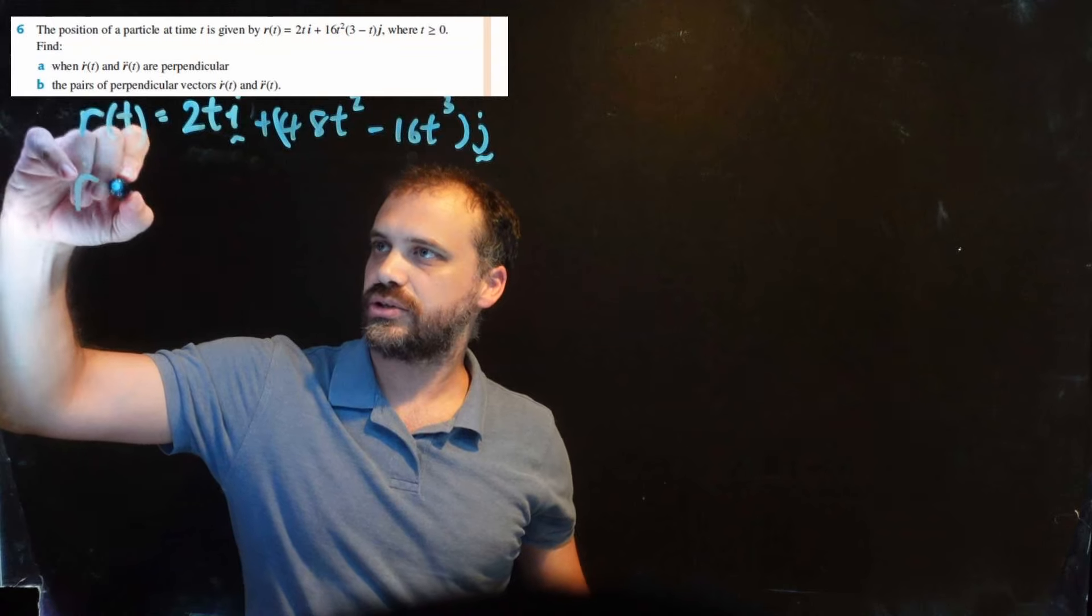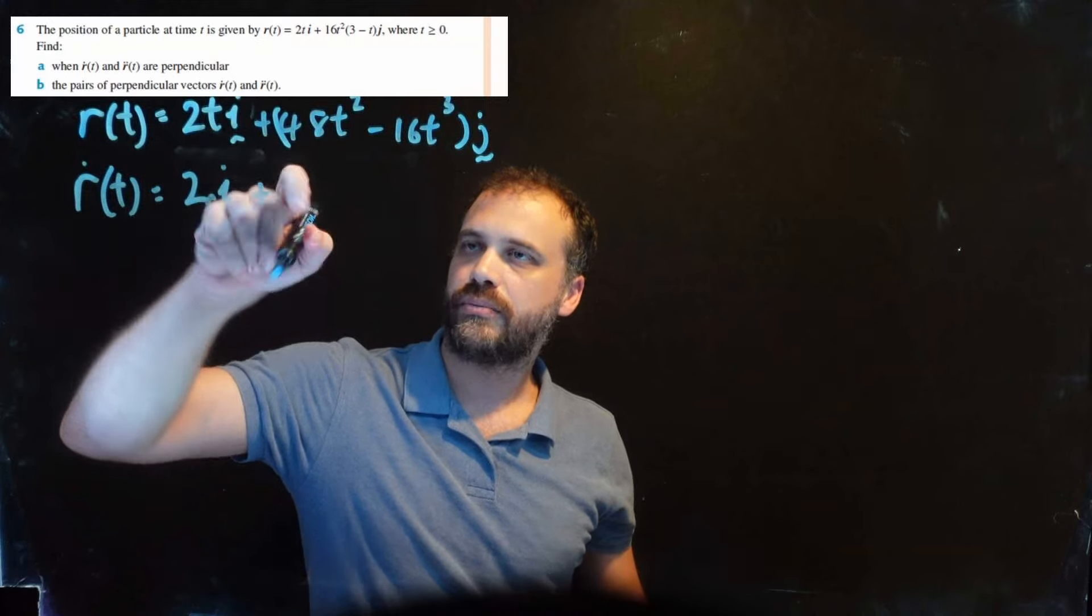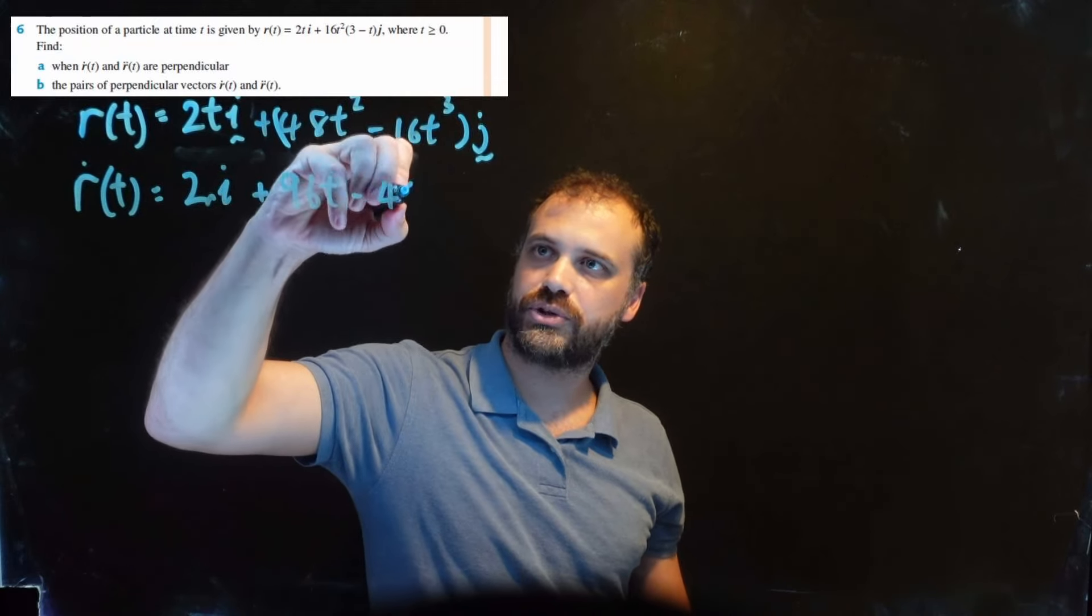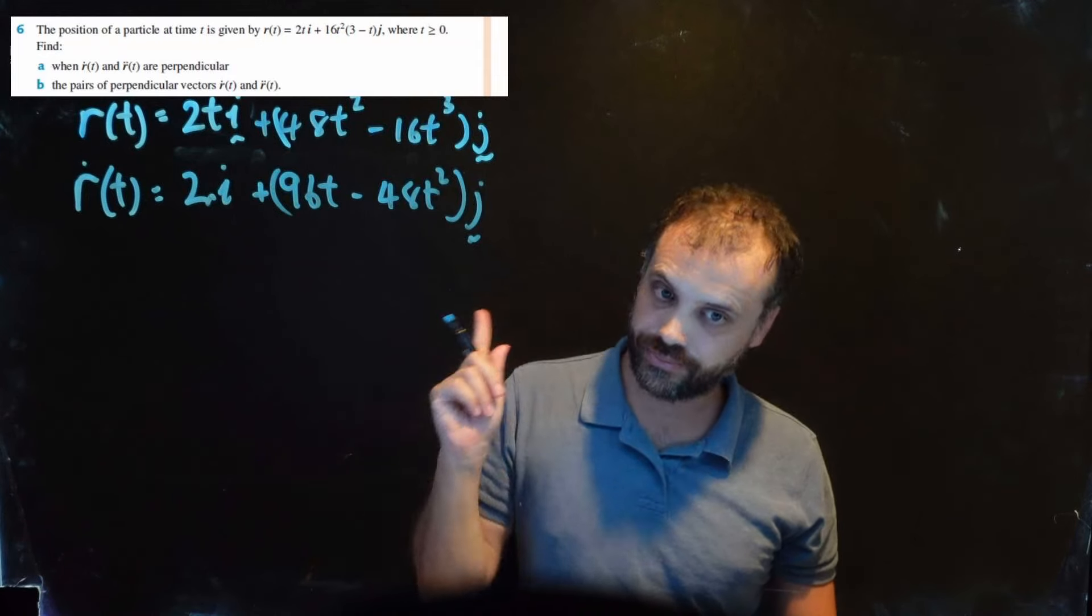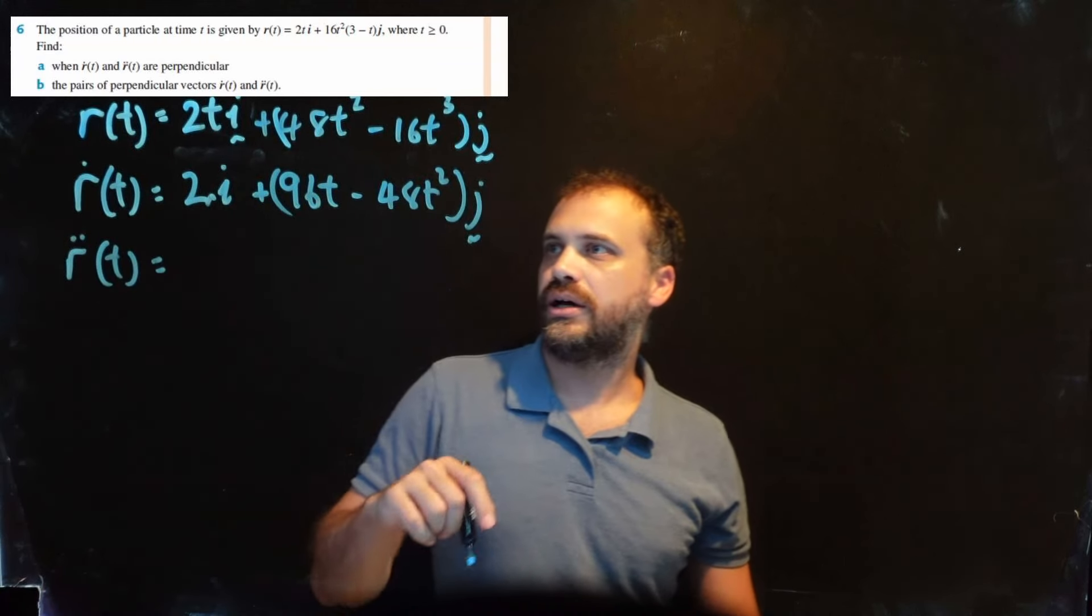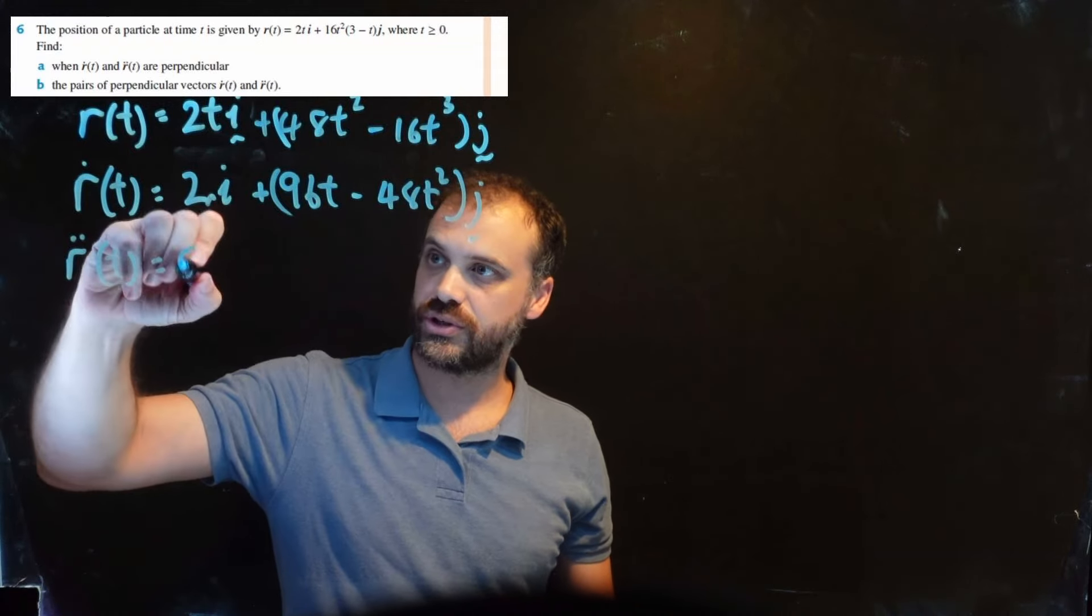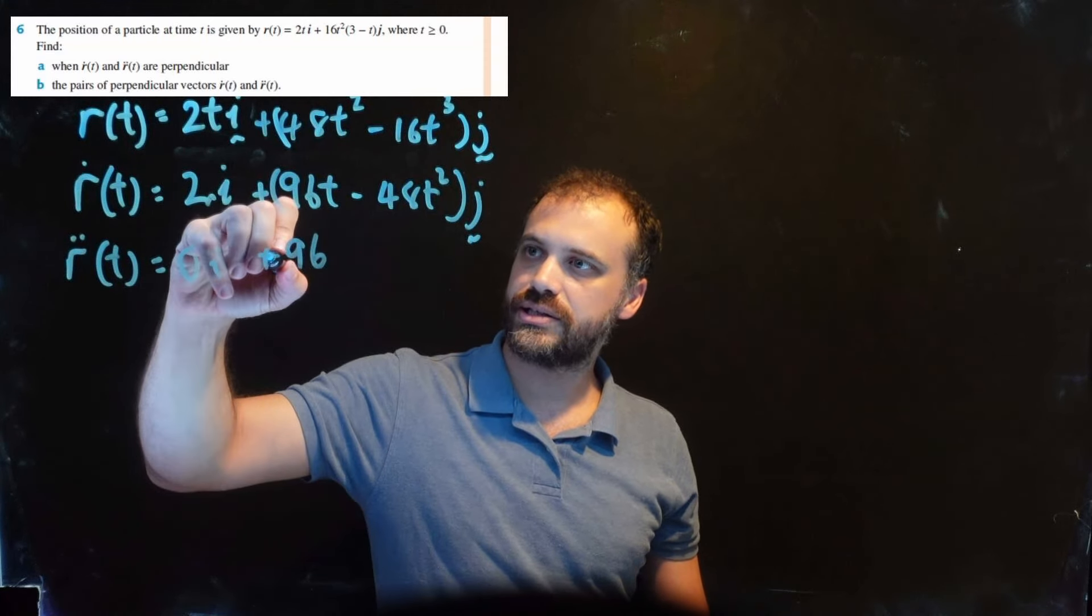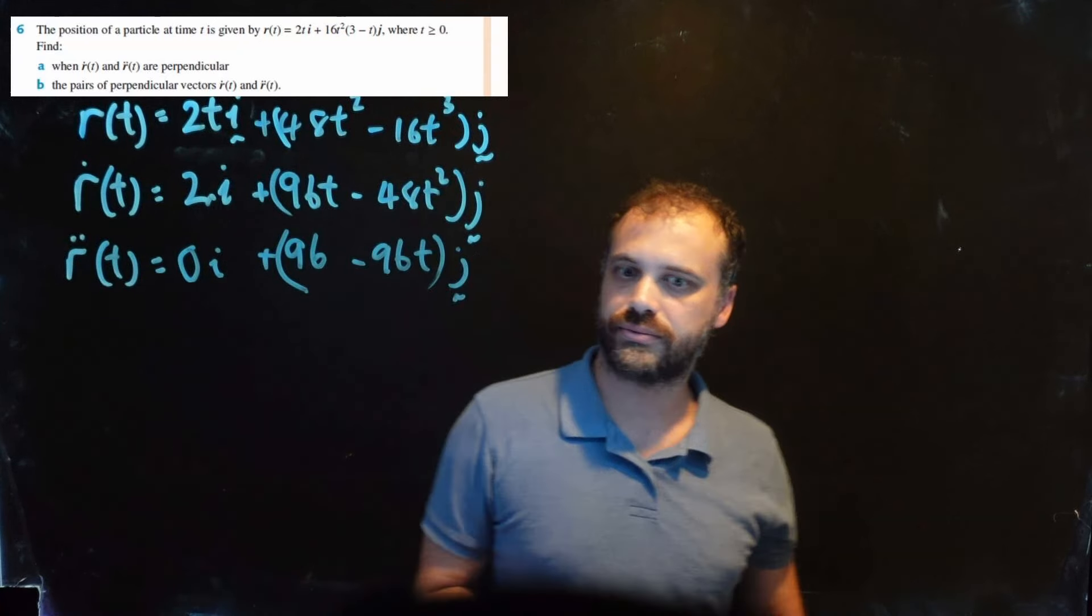r'(t) is going to equal the derivative of that, which is 2i plus the derivative of that, which is 96t minus the derivative of that, which is 48t²j. There is our velocity. And here is our acceleration: 2i, now the derivative of that is 0, so we've just got 0i. And then we've got 96 - 96t j.